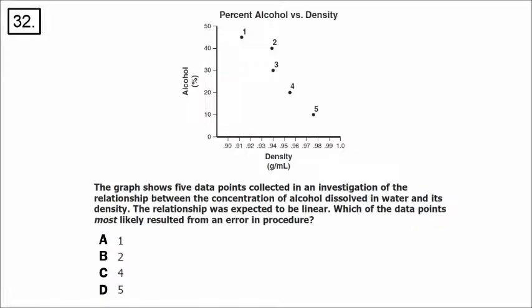Number 32: there is a set of data points that aren't all exactly in a line, but the relationship was expected to be linear. Drawing a straight line through the points, it looks like there was an error with data point 2 — it's the one that doesn't seem to fit with all the others.